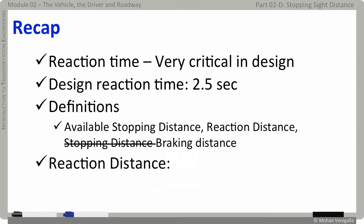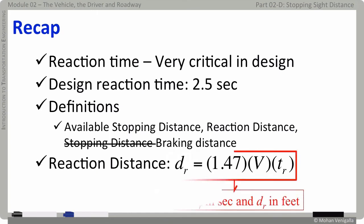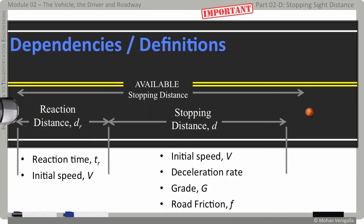We also derived a formula of reaction distance D sub r which is equal to 1.47 times speed v in miles per hour and reaction time in seconds. These are some of the definitions and dependencies we talked about in earlier parts.